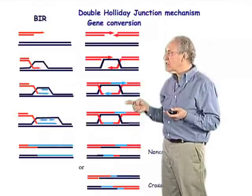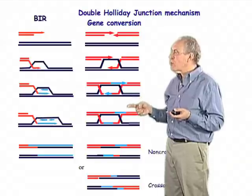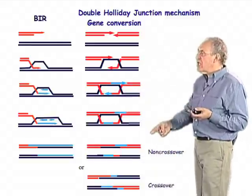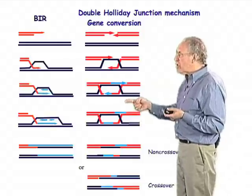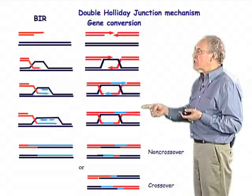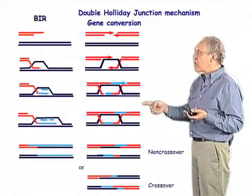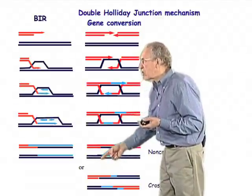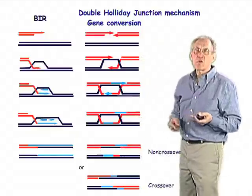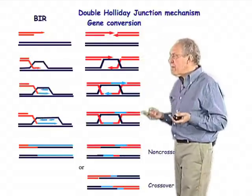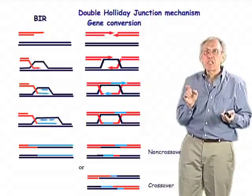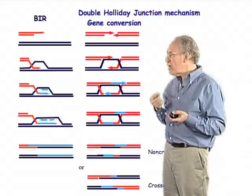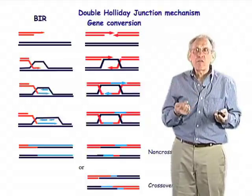This double Holliday junction mechanism has some very remarkable features. As the Holliday junctions are resolved, the structure can either be resolved with no crossing over — so the red sequences remain associated with each other — or there can be crossovers depending on the resolution, so that red sequences become joined to blue sequences and vice versa. This mechanism involves very limited amounts of DNA synthesis primed by the 3-prime ends of the invading DNA molecule and does not involve lagging strand synthesis.